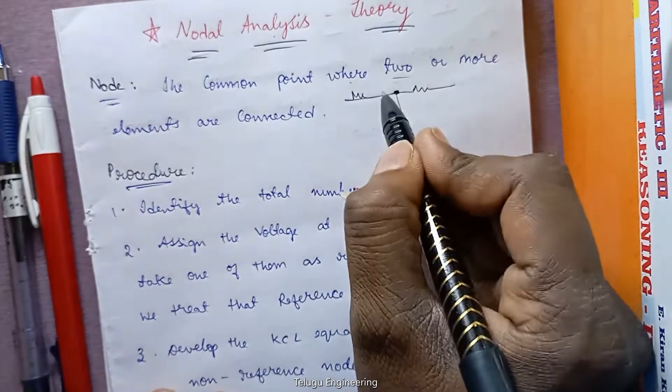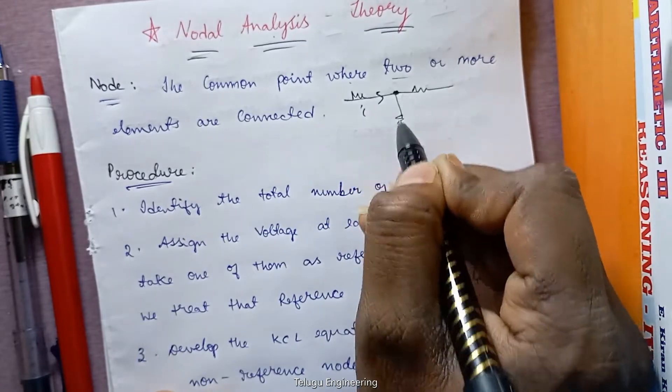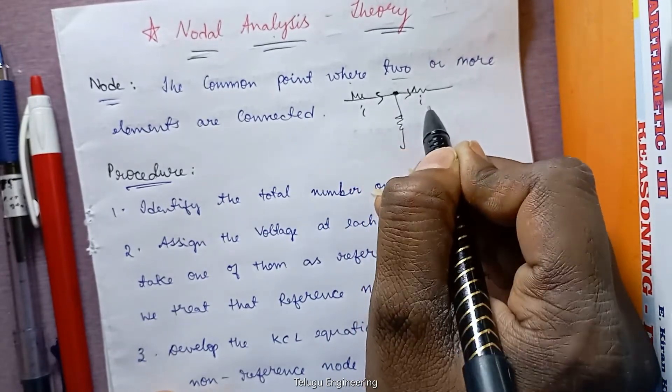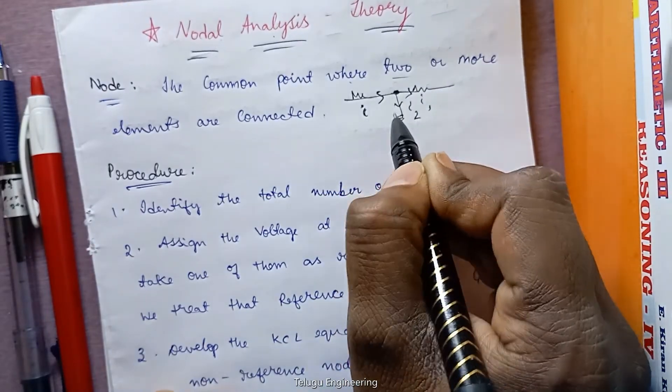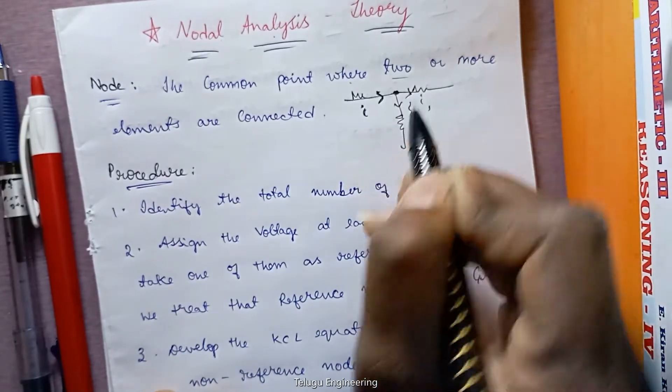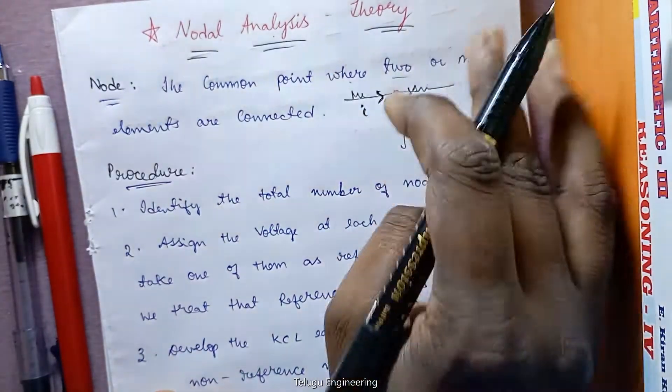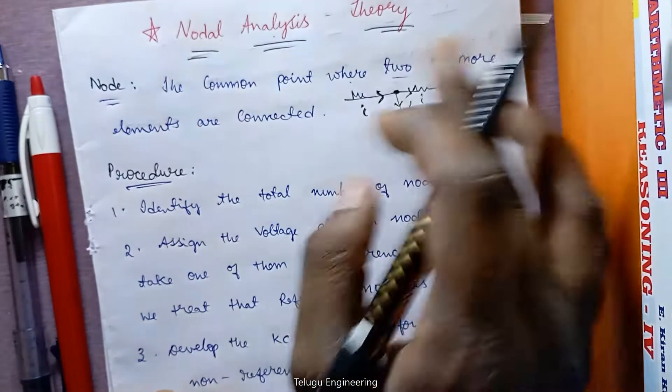And what happens here: current flows. Current flows in two directions, two different currents will be flowing. So current will divide. Current division is possible because current flows here: I1 current and I2 current, two different currents flow. So there is current division. So nodal analysis involves current division.